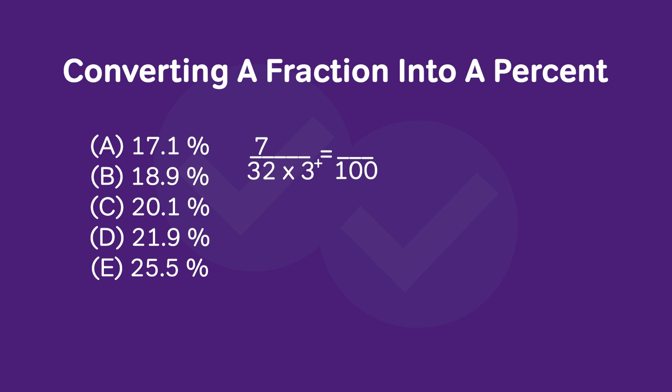Now if we multiply our denominator by a number slightly larger than 3, we must also multiply our numerator by a number slightly larger than 3. When we do this, we get a number slightly larger than 21, and this is equal to a number slightly larger than 21%. Now when we look at our answer choices, we see that our answer must be D, since it is slightly larger than 21%.